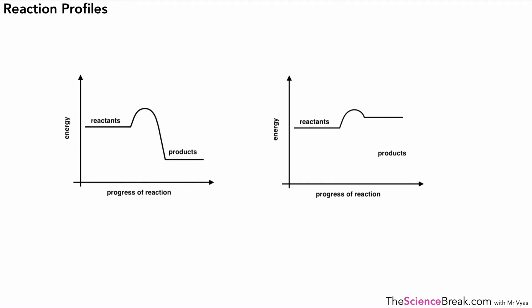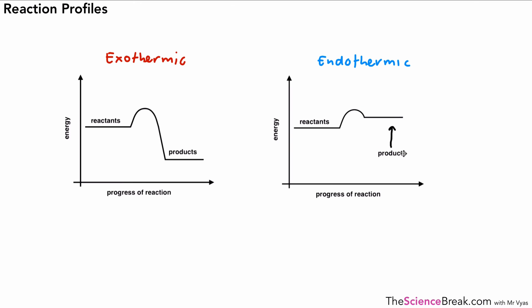So here we have our two diagrams for those two different kinds of reaction. On the left we have our exothermic reaction, where energy is transferred to the surroundings. And on the right we have our endothermic reaction, where energy is transferred in from the surroundings. You should be able to sketch these diagrams out for both types of reaction and recognize them if you're given them in a question. So that's about it for this video on reaction profiles. Thank you very much for watching and I'll see you very soon.